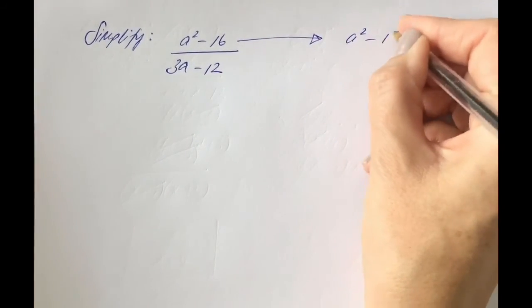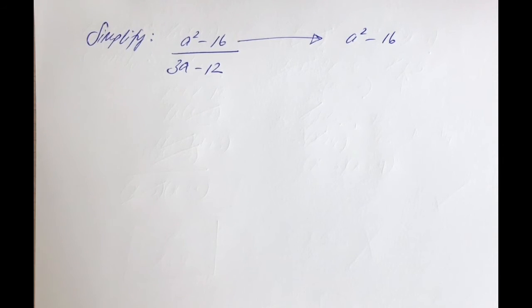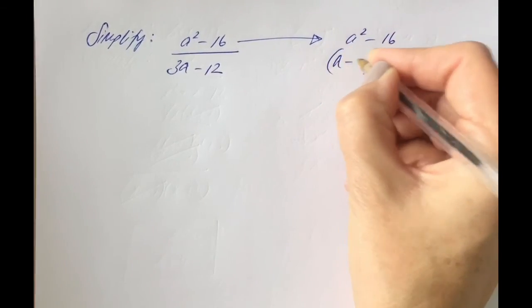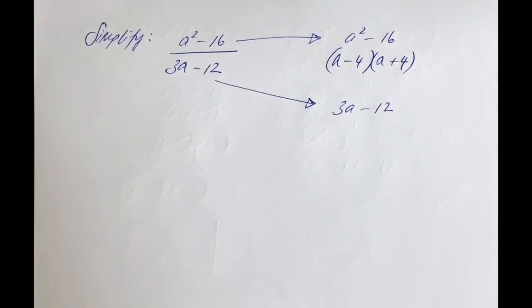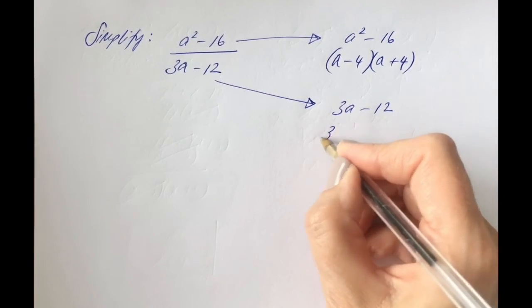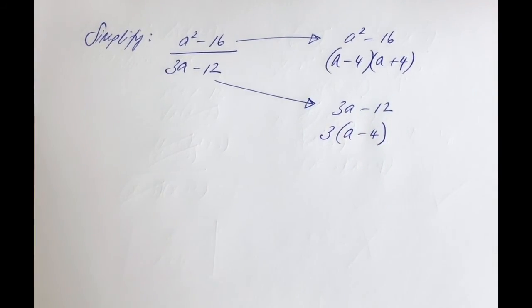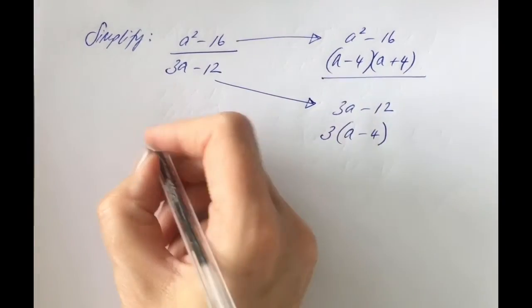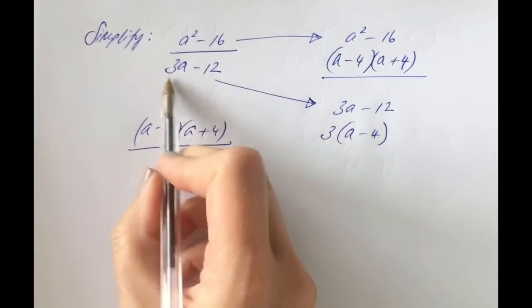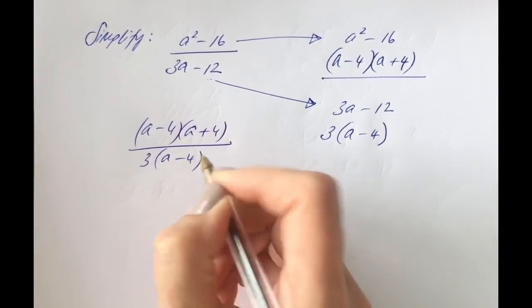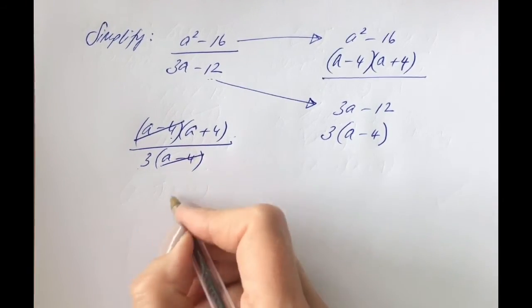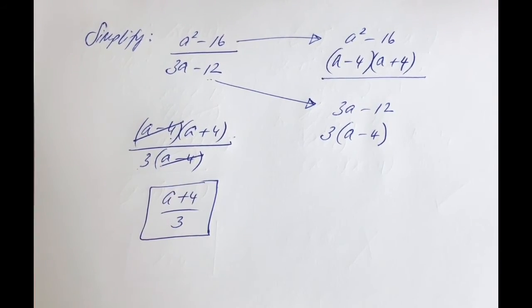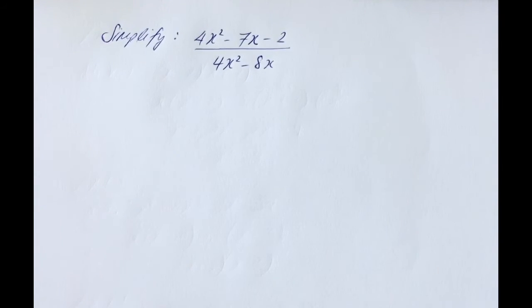Try this question: simplify (a² − 16) / (3a − 12). Pause the video if you want to try it yourself. On top, a² − 16 is a difference of two squares: (a − 4)(a + 4). On the bottom, 3a − 12 is common terms type: pull out 3 to get 3(a − 4). Rewriting: (a − 4)(a + 4) over 3(a − 4). Cancel (a − 4) from top and bottom to get (a + 4) / 3.